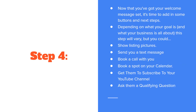Now that you've got your message set up, it's time to add in some buttons and next steps for people to take. Depending on your goal and business, these steps will vary — but you could do things like showing pictures of your listings, send a text message, have them book a call or a spot on your calendar, get them to subscribe to your YouTube or TikTok, or ask them some qualifying questions. You can add buttons and links to your messenger bot really easily without any coding or technical work.